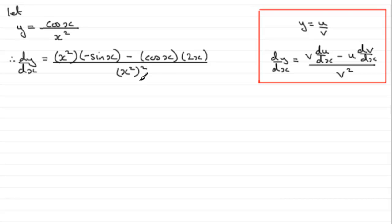So we need to tidy this up. The first term would look better as minus x squared sine x. Next term would look better as minus 2x cos x, and we can release the brackets if we write it like that. All over x squared all squared, which is x to the power 4.